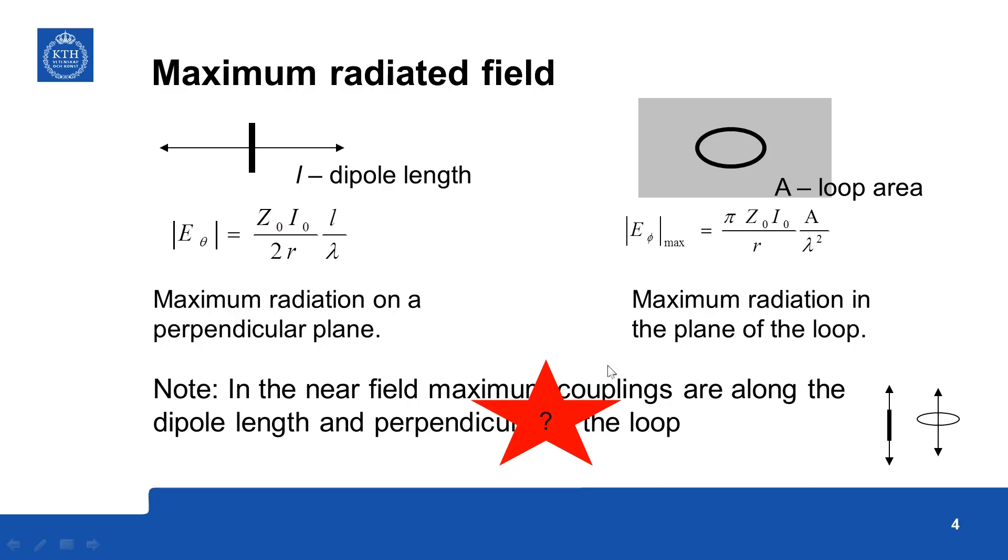Previously we have seen that we can find maximum radiated field from electric dipole and magnetic loop and maximum radiation is on a plane perpendicular to the dipole.